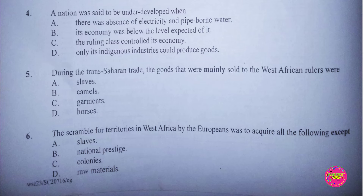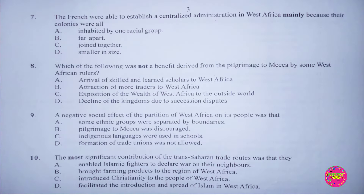Question 7. The French were able to establish a centralized administration in West Africa mainly because their colonies were all: A. Inhabited by one racial group, B. Far apart, C. Joined together, D. Smaller in size. The correct answer to this question is C. Joined together.